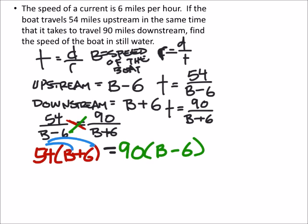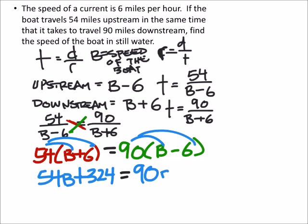From here, 54 times B plus 6 would equal 90 times B minus 6. Distributing the 54 and the 90, I get 54 times the speed of the boat plus 324 equals 90 times the speed of the boat minus 540.